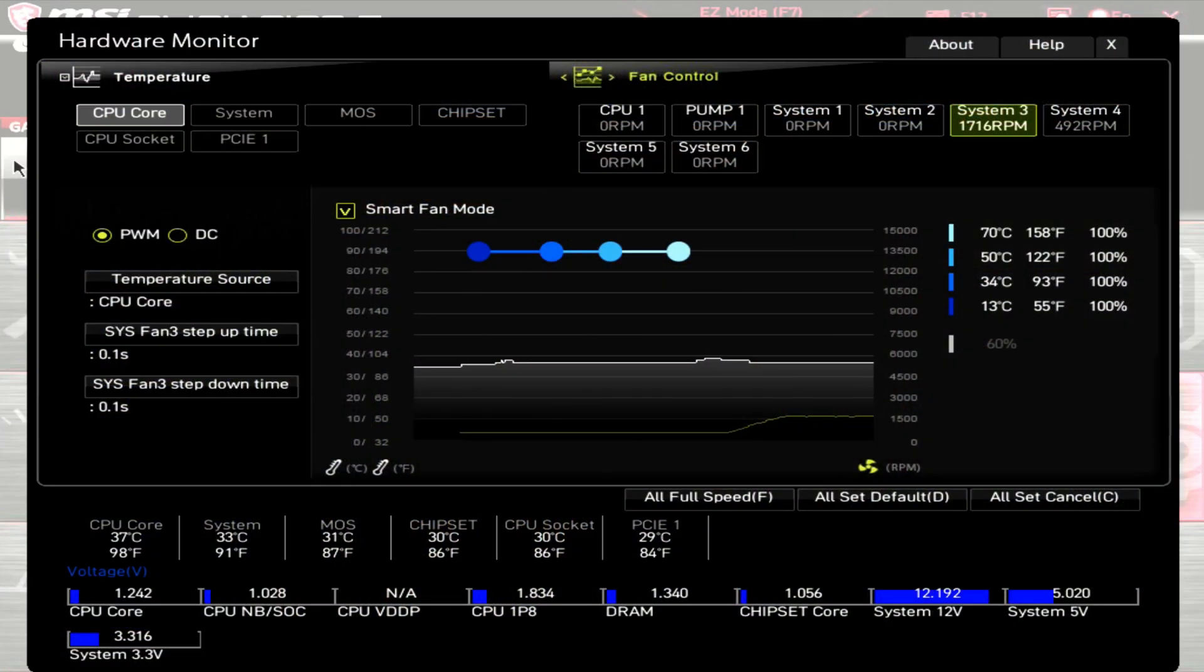Now before I get into the results of my testing, I want to be very clear. This is based off of a sample size of 1, so this isn't necessarily the exact performance you're going to get, but it should be relatively close. Starting with the PWM range test. At 100% PWM, this P12 has an RPM of 1740ish. Then at 0% PWM, this P12 has an RPM of 550ish.